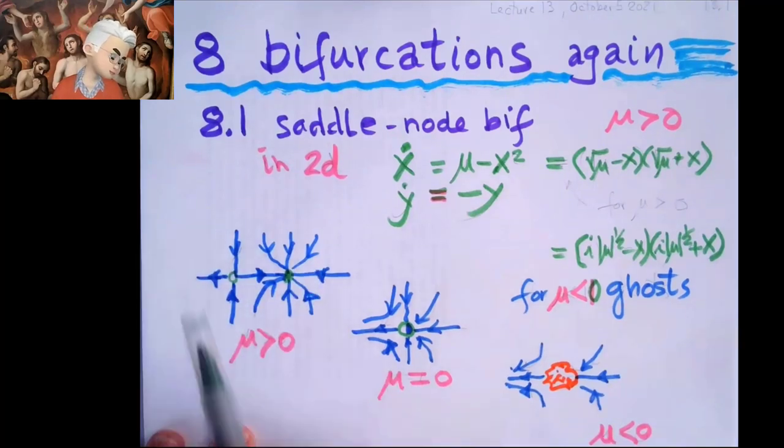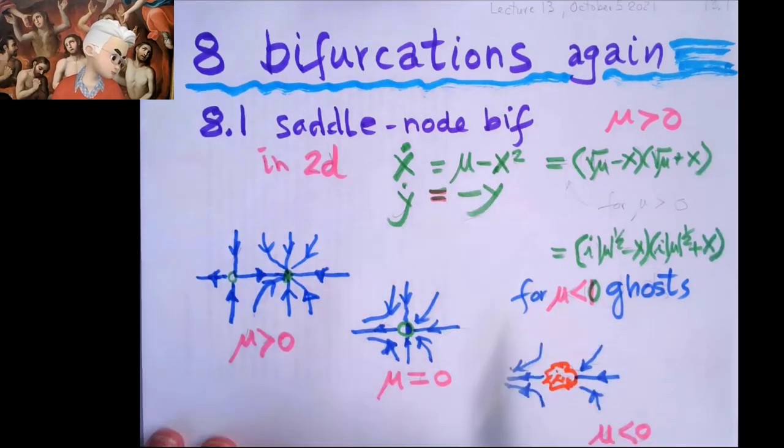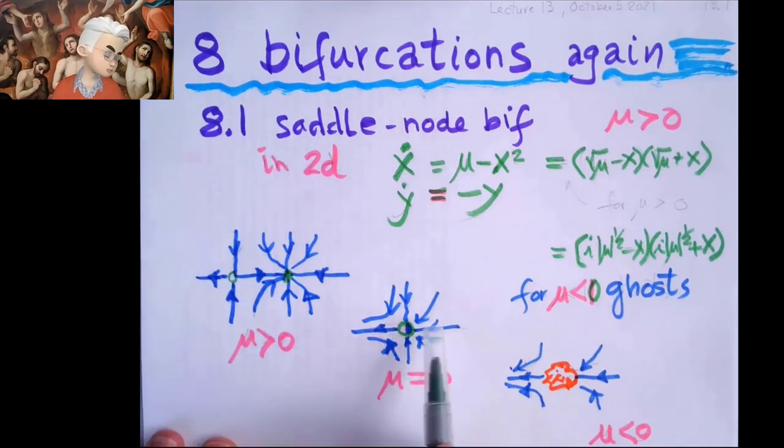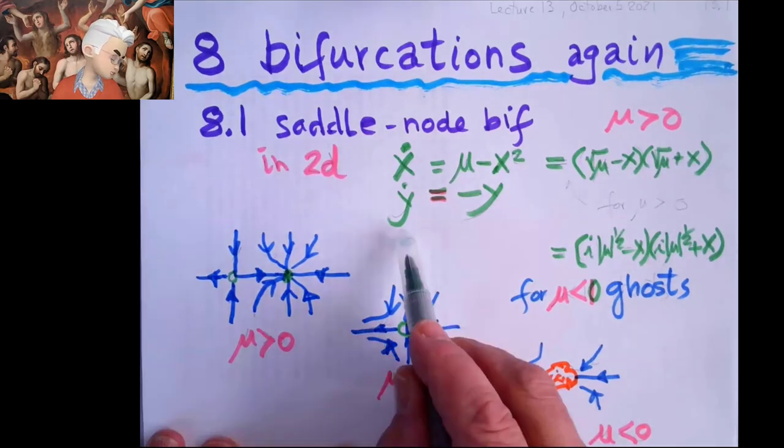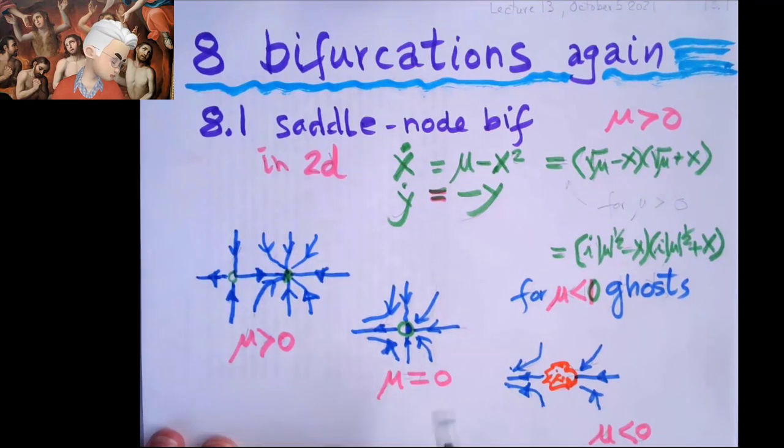And if mu is zero, then you get into this weird situation that from the left-hand side, it looks repelling, but from the right-hand side, it looks attractive. And again, you still have this separatrix, this stable manifold. So these guys are running this way, these guys are running that way. But the world is still divided in two halves.